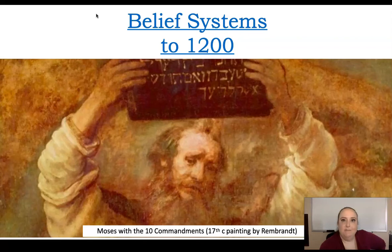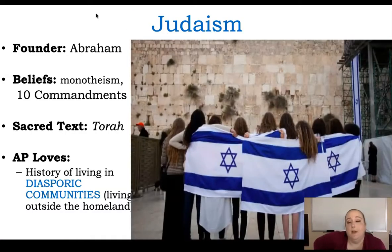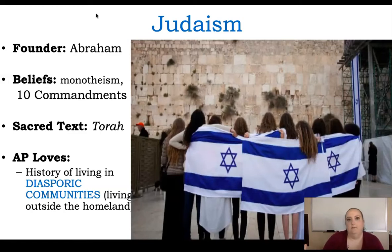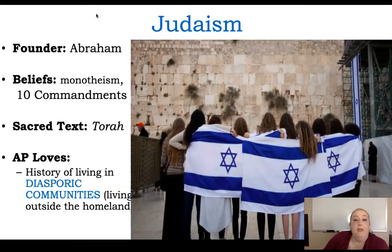It's time for religion. Let's talk about all the major religions up to the year 1200, because you need to know all of them. The first is Judaism. The founder is Abraham. They are a monotheistic religion — one God — with the Ten Commandments, and their holy text is the Torah. We talk about it because they have diasporic communities — dispersed communities because of war, politics, famine, etc.